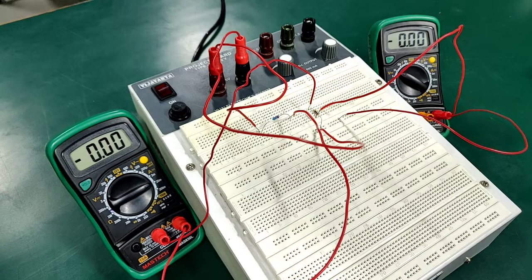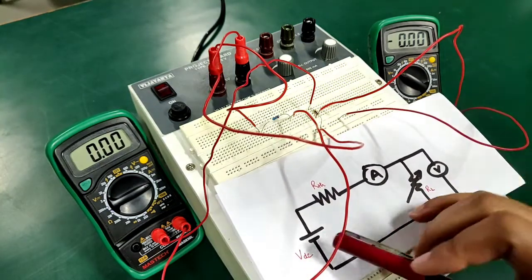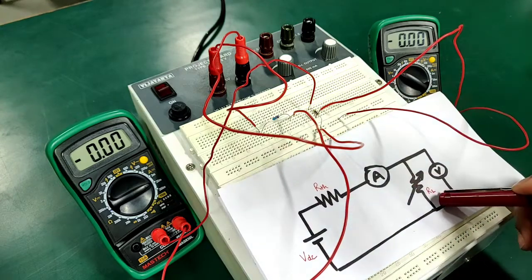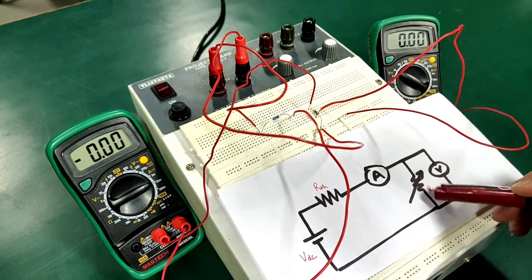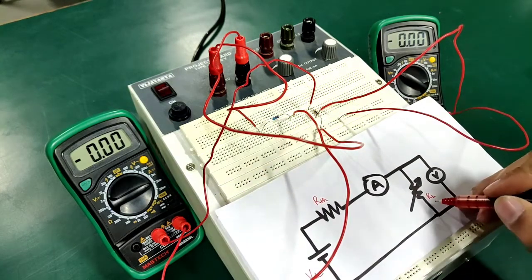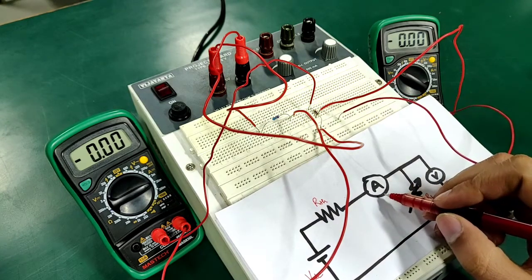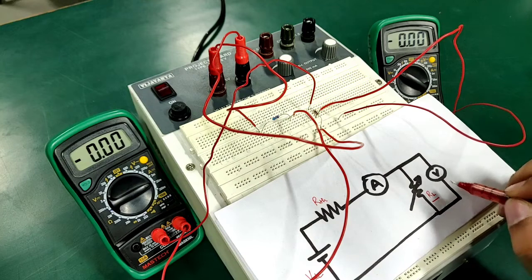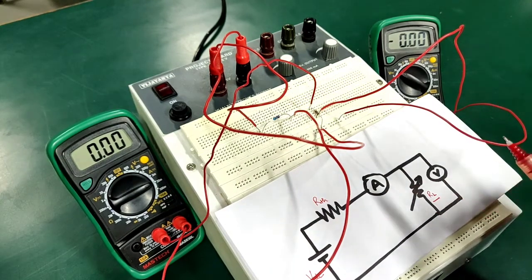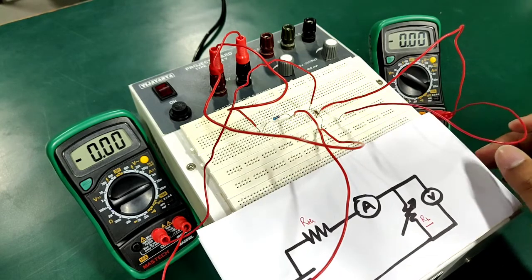For doing that, let us consider a simple circuit which comprises of a voltage source, a resistance Rth, and a load resistance RL. So this arrow symbol indicates that this RL here is variable in nature, and these are your ammeter and voltmeter which are being connected in series and parallel respectively for measurement of load current flowing across RL and the voltage across our load resistance RL.